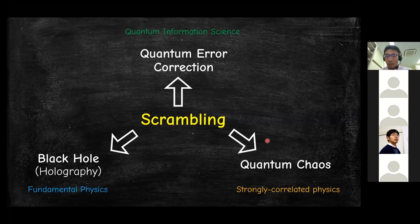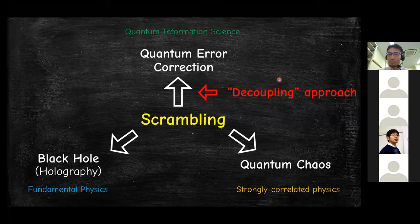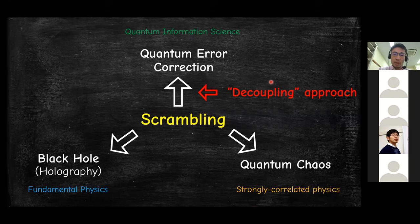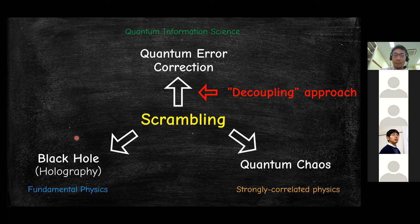In quantum information, there are two important keywords: scrambling and decoupling. Please remember the name decoupling — it's as important as scrambling in this talk. We care about scrambling in quantum information because it's closely related to the decoupling approach, and by using this approach we can connect scrambling to quantum error correction. In this talk, I'll first overview scrambling and decoupling in quantum information science, and then explain the implications for different fields of physics.